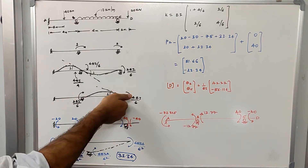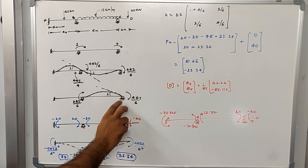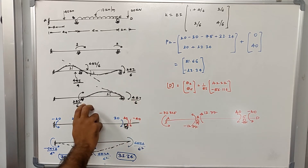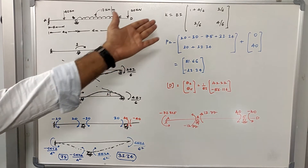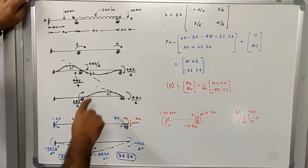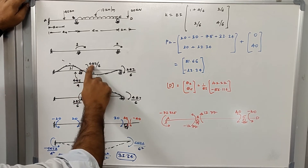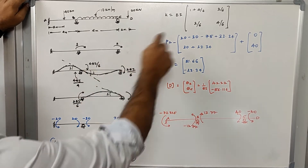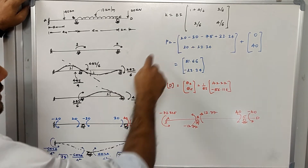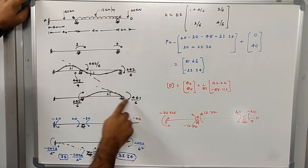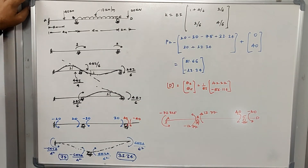Applying unit rotation at the second coordinate (joint C), the moment generated at the CB end is 4EI/6 and at the BC end it is 2EI/6. From these results we compose the stiffness matrix. K11 is the sum of 4EI/6 and 4EI/4. K21 is 2EI/6. Similarly, K12 is 2EI/6 and K22 is 4EI/6.